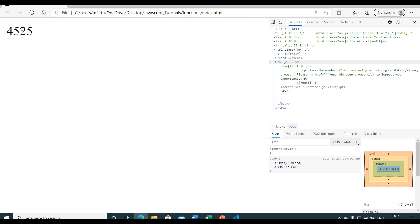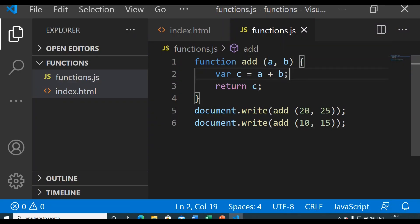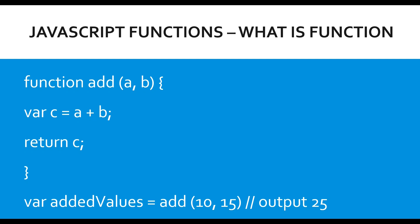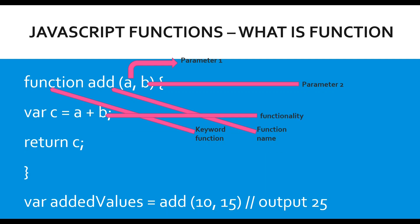From this example we understand that you can provide a function some input, and after working on that input it will return some output. You can also call the same function multiple times with different parameters. Now let's take a closer look at the function syntax. First is the keyword 'function', which tells JavaScript you are going to define a function. Second is the function name — you need it so you can call it from other places. Then parameters or inputs: here we have two, but you can have multiple parameters or none at all.